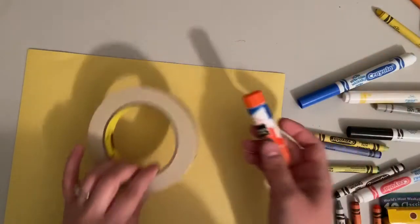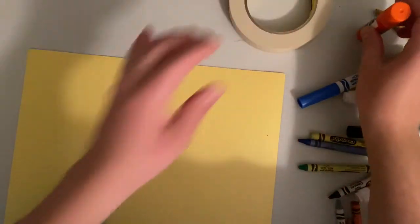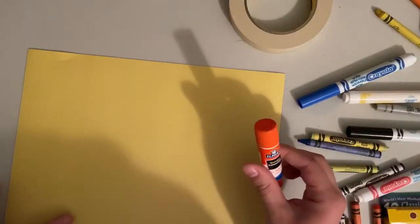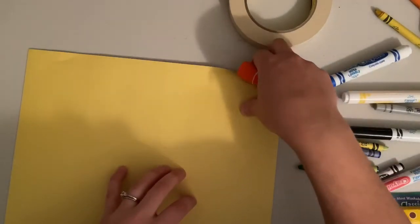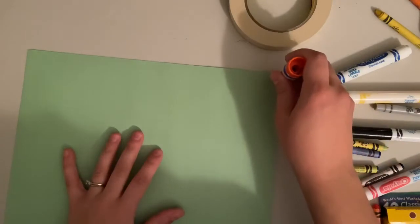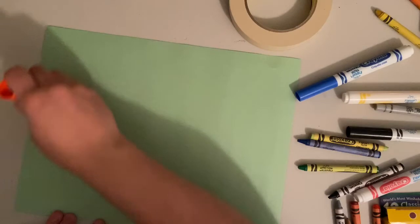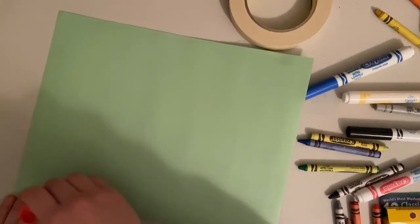You also will need either glue or tape. I am going to show you what you would do with glue. So if you have a glue bottle you could use that or a glue stick. You're just going to put the glue on one side of one of the papers, only on three sides.